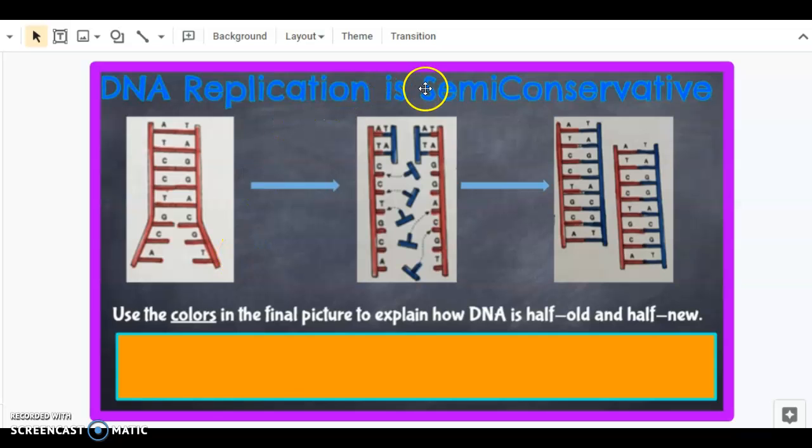We call DNA replication semi-conservative. That word semi means part way or partial, and the word conservative here means to save or to keep original. So it's only partly conservative, it only somewhat keeps the original. When the DNA splits, it uses loose nucleotides to form a new side for each of the originals, which means that the new DNA is half old and half new.